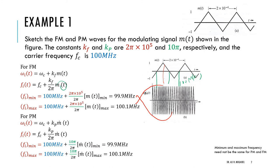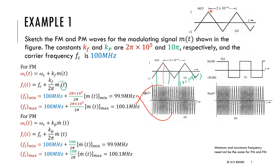For the PM case we have a similar approach, except the first equation is different. The instantaneous frequency for PM is equal to ωc plus kp times m-dot(t), and we divide by 2π to go into hertz. When we substitute, we need the minimum and maximum of the derivative of the message. The derivative of this signal will be a square wave — positive slope and negative slope. The slope is Δy/Δx: Δy is 2 and Δx is 1×10⁻⁴.